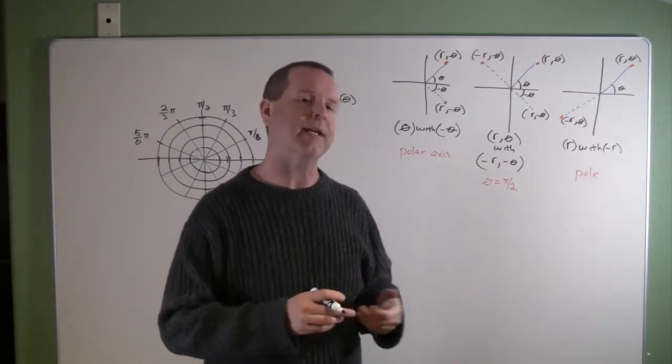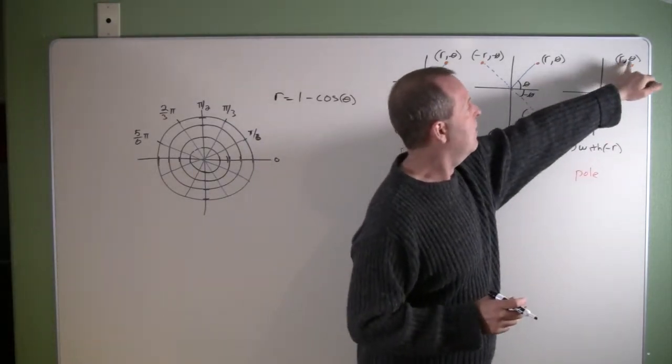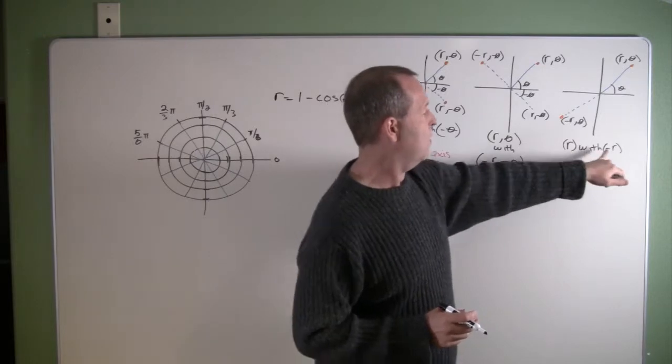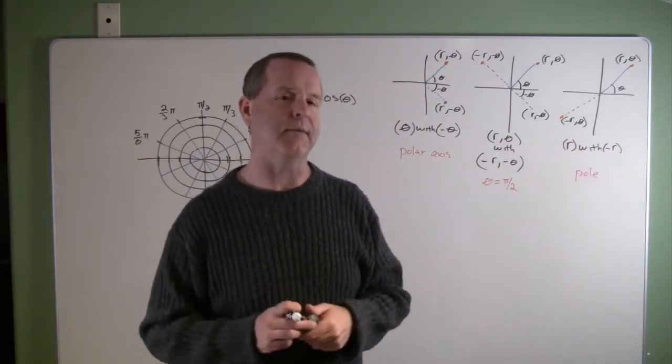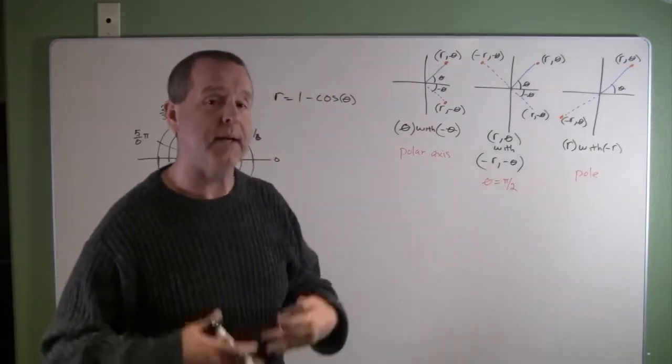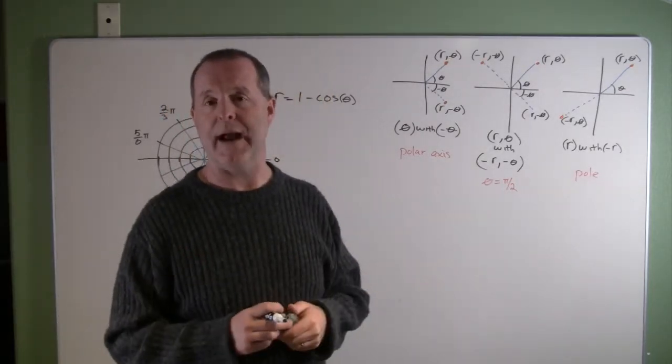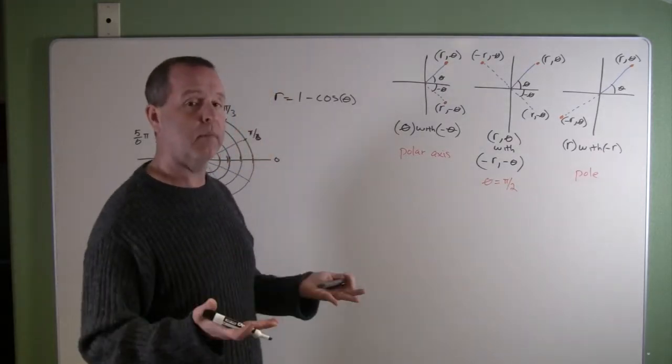And there's one last test for symmetry. And that's about the pole, that if we replace r with negative r, and we get the same equation, then we know we have symmetry about the pole. And so those three can help us graph some of these graphs maybe a little bit more efficiently and with fewer points.